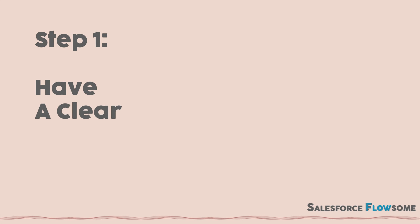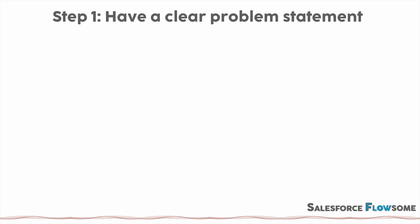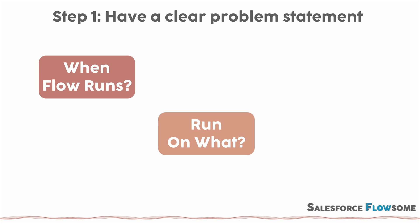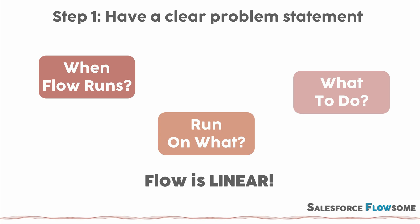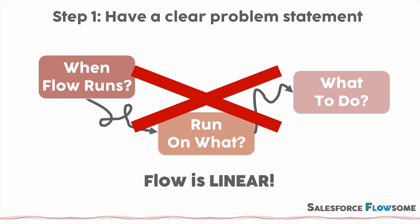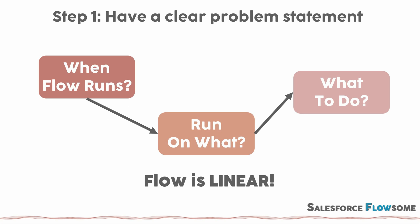Step one: have a clear problem statement. Most flow experts will agree on this one. In order to build an efficient solution, first you need to state your problem precisely. That includes when should the flow run, what objects should be involved, and what do you want to achieve at the end? This is very important because flows are just linear solutions, meaning things always happen one after the other. When building flow, all we need to do is find the shortest line that connects every part of the problem. If you don't have a clear definition of the problem, you might end up making unnecessary detours. So first thing first, be crystal clear about your objective.